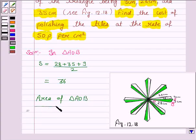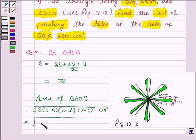Now we find area of triangle AOB which is given by under root of S into S minus A into S minus B into S minus C cm².